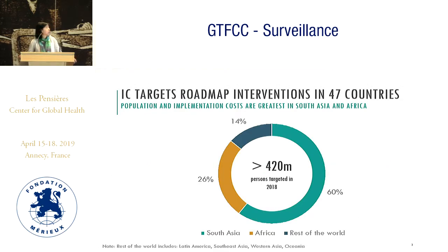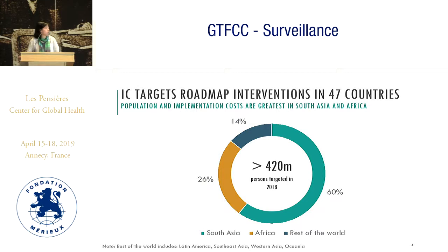The investment case is targeting 47 countries, and the population of those 47 countries in 2018 we've estimated to be about 420 million persons. It's split into different regions — we didn't use WHO or UNICEF regions; we tried to stay on more content-based geographical regions to maintain coherence. South Asia is really driving the numbers at 60%, Africa is around 30% of the population, and the rest of the world is about 14%. Because South Asia and Africa are the bigger population drivers, they are the bigger cost and benefit drivers.